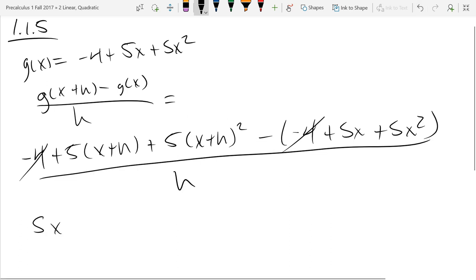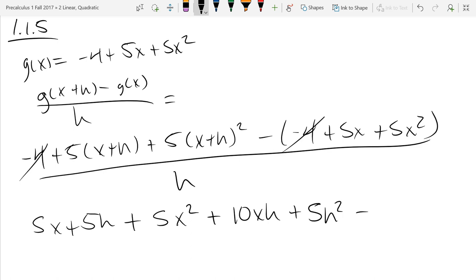So we have 5x plus 5h plus, when I foil this out, I get x squared times 5. That's 5x squared. I have xh plus xh times 5, so that's 10xh, h squared times 5. And I'm going to distribute this negative sign as well, minus 5x minus 5x squared.